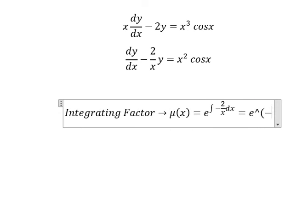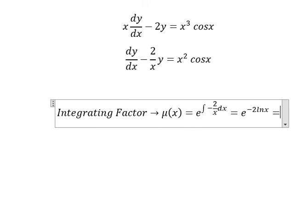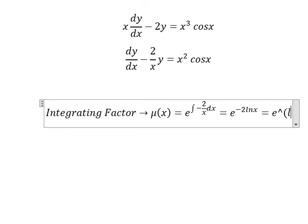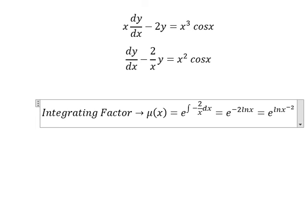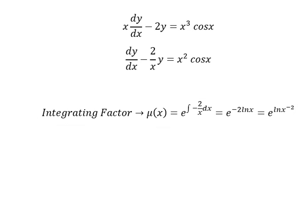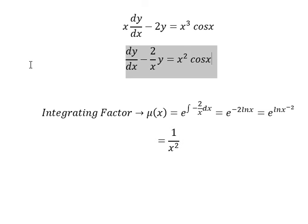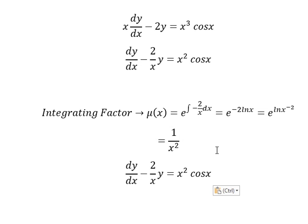And we have like this. Next, negative 2 goes inside the natural log here. And this one we have 1 over x squared.